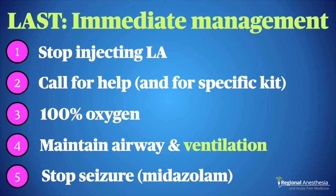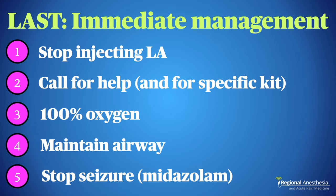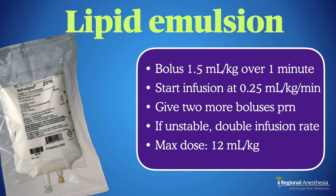If the worst happens and you have a case of LAST, your first steps are: stop injecting the offending agent, call for help, call for the lipid emulsion kit specifically, and maintain the airway — ventilating the patient if necessary. Seizures produce a profound hypercarbic state which vasodilates cerebral arteries, promoting delivery of local anesthetic to the brain; aim for eucapnia or slight hypocapnia. Benzodiazepines are first-line to stop the seizure — 2 mg of midazolam is usually sufficient. Propofol should be used sparingly given its negative effects on blood pressure and cardiac output.